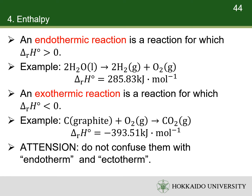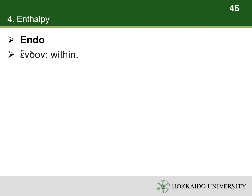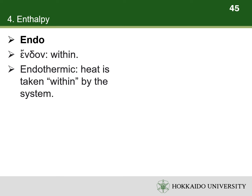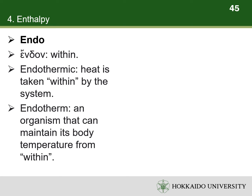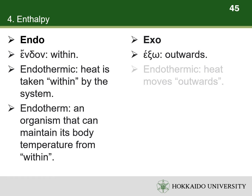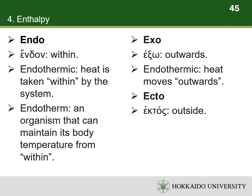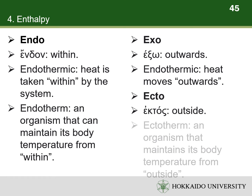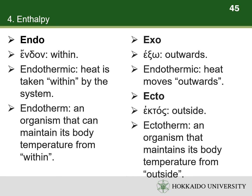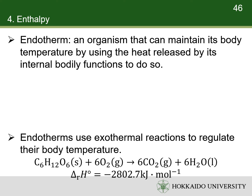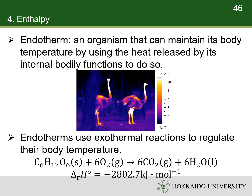Pay attention: do not confuse endothermic and exothermic with endotherm and ectotherm. The prefix endo originates from the Greek word meaning within; endothermic means that heat is taken within by the system, while endotherm means an organism that maintains its body temperature from within. The prefix exo means outwards; exothermic means heat moves outwards. The prefix ecto means outside; ectotherm means an organism that maintains its body temperature from outside. In biology, an endotherm, such as ostriches, maintains its temperature higher than its surroundings through metabolism, using exothermic reactions like the oxidation of glucose.